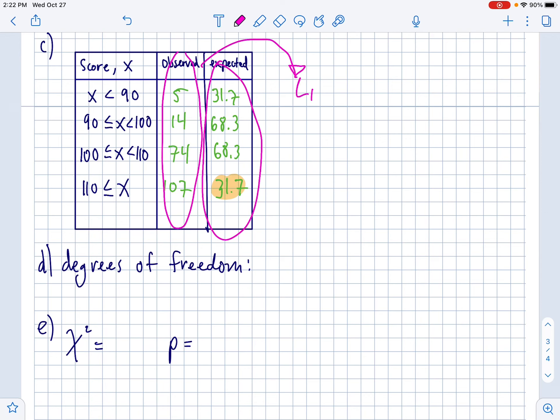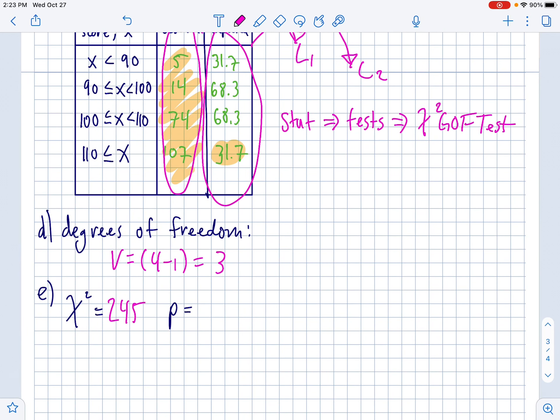Now we're going to run a chi-squared goodness of fit test on this. So once again, you're going to take all of this column, your observes, and put them into L1. You're going to take all your expected, put them into L2. And then you'll go stat test chi-squared GOF. Degrees of freedom in this problem for part D, we'll notice that there's four things we're looking at, four categories. So if you take one off of that, it's V is equal to four minus 1. So there's three degrees of freedom. If you punch that all in into L1 and L2 and run your goodness of fit test, you should get the chi-squared value is 245. Oh my gosh, that's huge.